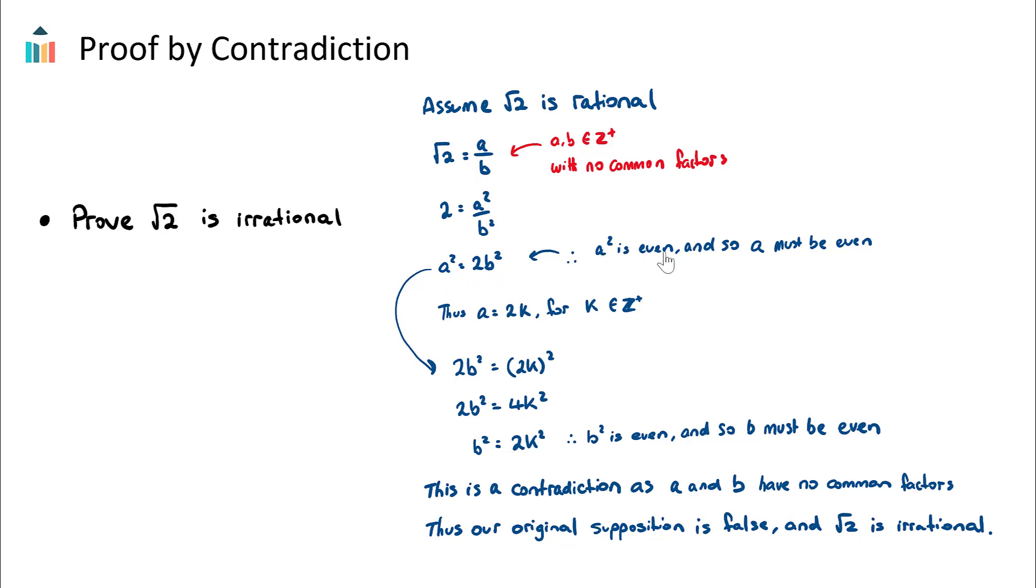So therefore we can say a² is even, and if we know that a² is even what we therefore know is that a must be even. You can confirm that if any squared number is even, the square root of that number will also be even. So we have concluded here that a must be even as well.